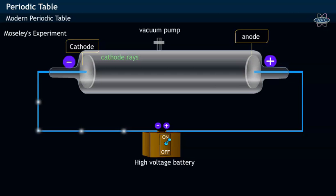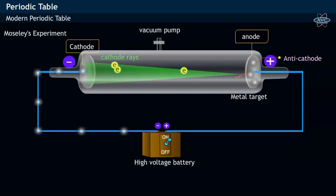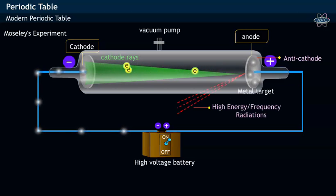In this experiment, a beam of cathode rays consisting of electrons are made to bombard on a solid metal target which is called as anti-cathode. Then it was observed that high energy radiations with higher frequencies called X-rays are emitted at an angle of 45 degrees.